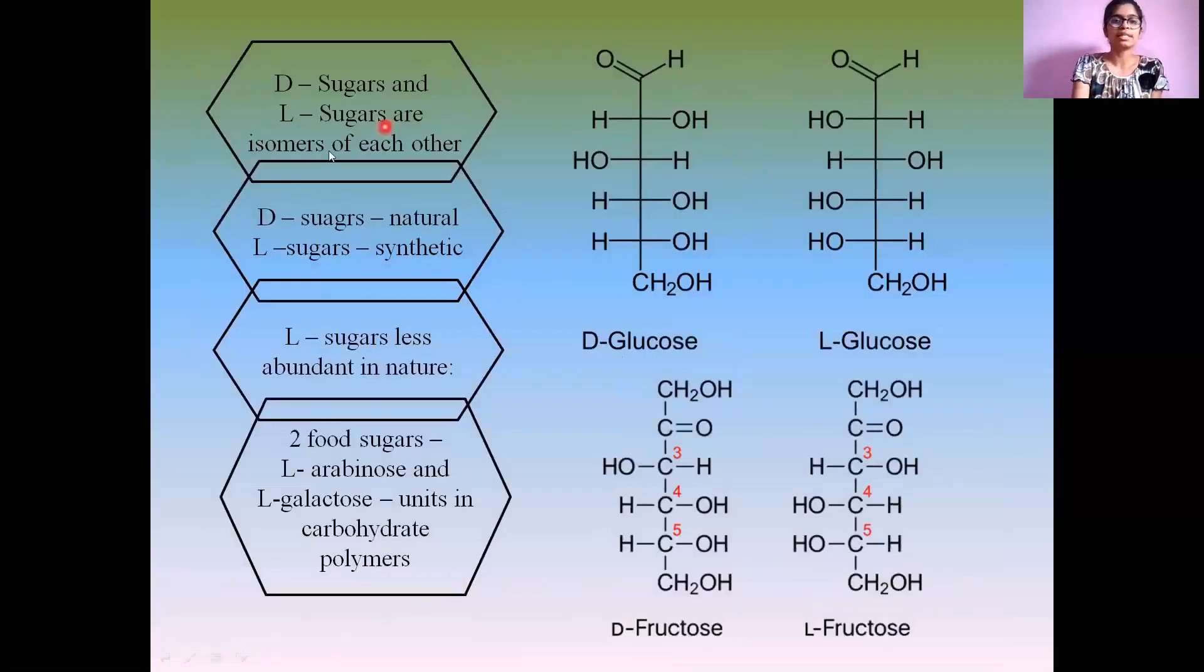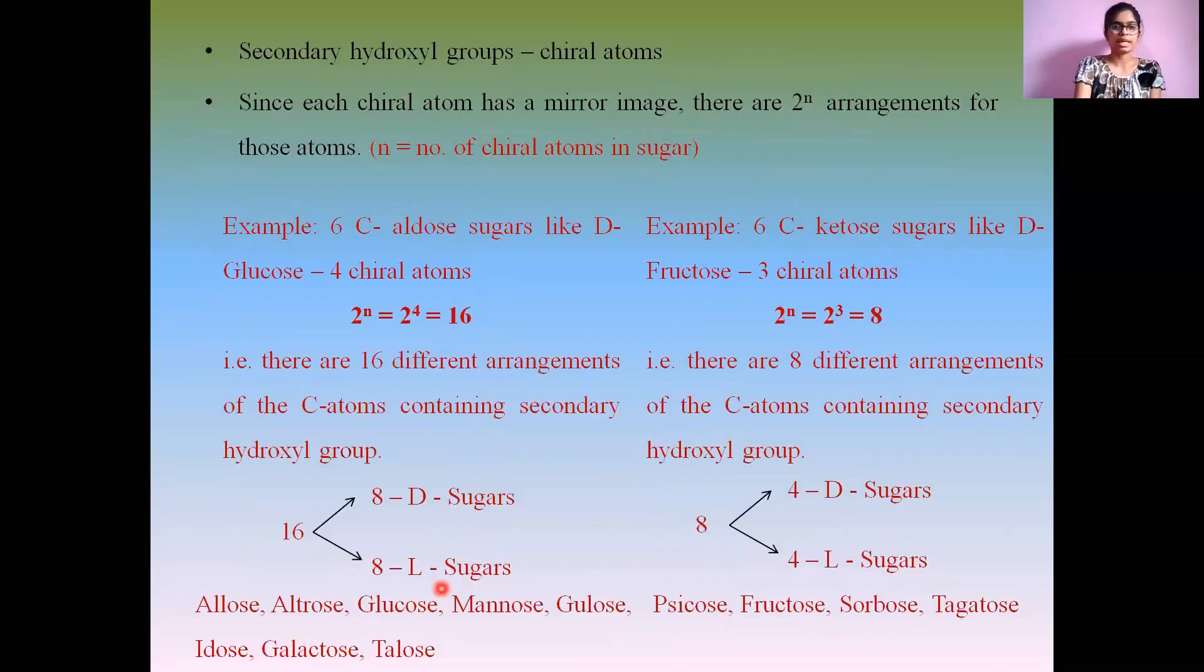D sugars and L sugars are isomers of each other and also mirror images of each other. D sugars are naturally occurring, while L sugars are synthetic and very less abundant in nature. There are a few L sugars like L-arabinose and L-galactose, which are present as units in the carbohydrate polymer in the cell wall.